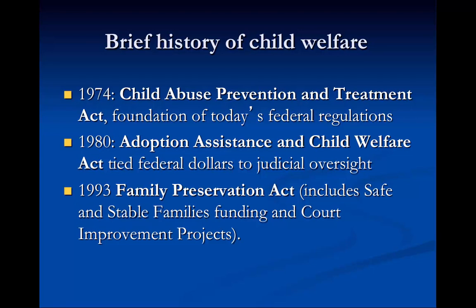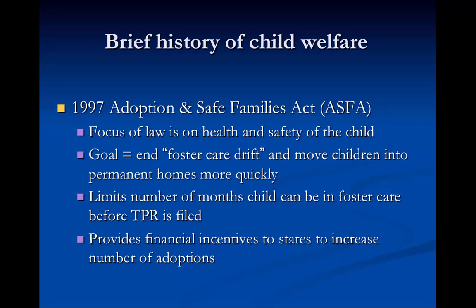In 1993, the Family Preservation Act, including the Safe and Stable Families Funding and Court Improvement Projects, is where we begin to see the tide changing with focus on family preservation and this whole idea of concurrent planning, which we'll talk more about as the semester progresses. Then in 1997, the Adoptions and Safe Families Act really changed the face of child welfare — the focus of the law is on health and safety of the child, moving to end what was known as foster care drift, where children remained in foster care for years without permanency. It also provided financial incentives to states to increase the number of adoptions.